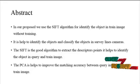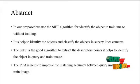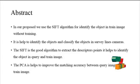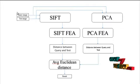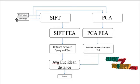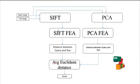In this process, we do not need any classifier because training is not required in our process. Now I will explain the flow diagram of our proposed system. In this flow diagram, we first give the query image and also the test image into the SIFT and BCA algorithm. The SIFT will extract the SIFT descriptor points.